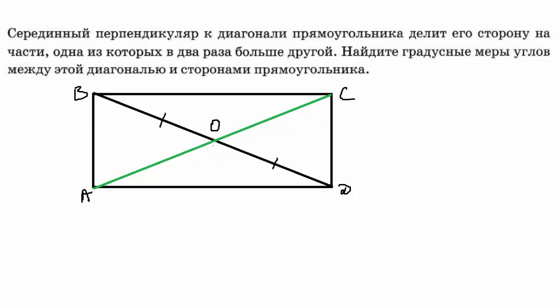У нас есть серединный перпендикуляр — из точки O проведём перпендикуляр к стороне AD. Угол здесь 90 градусов. Соединим полученную точку с вершиной B.